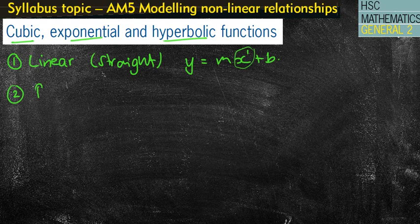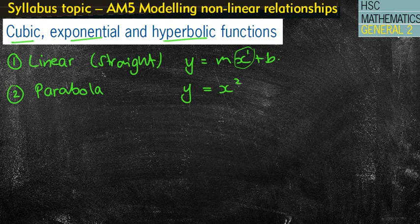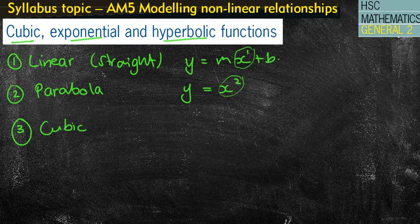Last lesson we looked at our parabolas or quadratic functions, which were in the form of y equals x squared plus something — it was the x to the power of two that made it a parabola. So today we're going to be looking at a cubic graph. You might know that a cubic graph is going to have the formula y equals x cubed — that's what makes it a cubic.